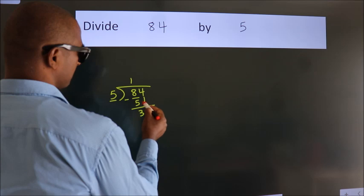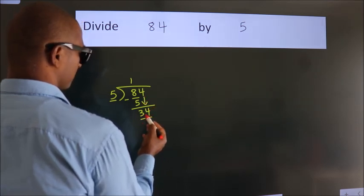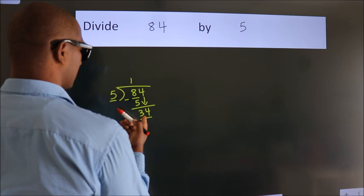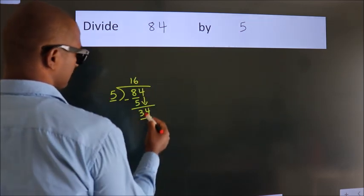After this, bring down the beside number. So 4 down. So 34. A number close to 34 in 5 table is 5, 6, 30.